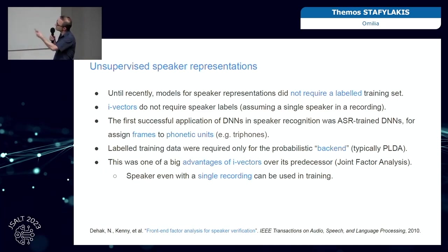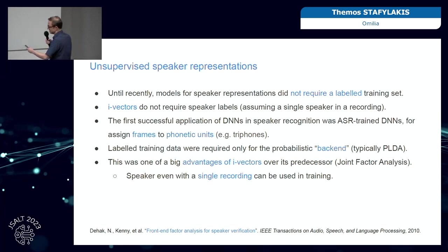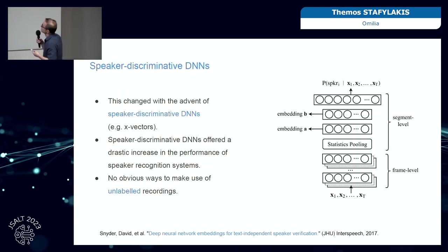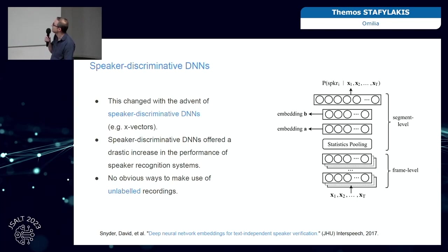That was one of the main advantages of i-vectors with respect to the predecessor, joint factor analysis, where you needed many recordings from each speaker in order to use them in the training set. But things changed radically with the introduction of speaker-discriminative DNNs, primarily from Johns Hopkins University, and the GALD implementation was very successful.